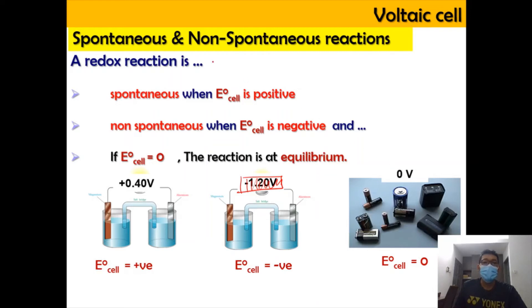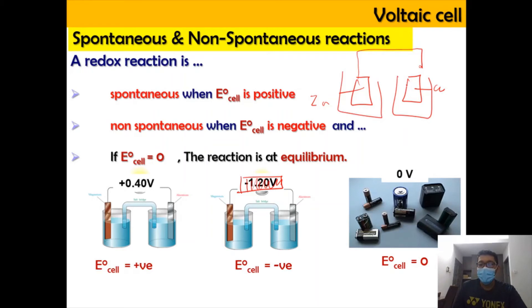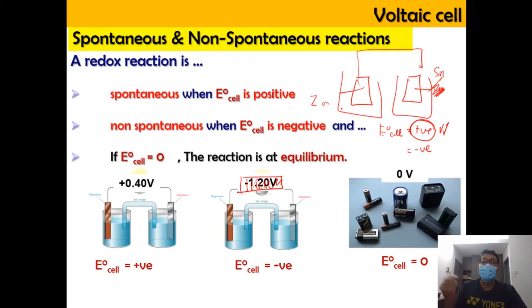Essentially, predicting spontaneity involves trial and error. For example, if you have two electrodes — zinc and copper — you connect them and measure whether the E0 cell is positive or negative. If positive, it is a spontaneous reaction. If not, you can try changing the electrode substances and measure again to determine spontaneity.